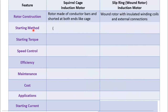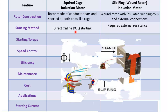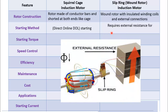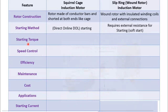The starting of squirrel cage is simple, for example direct on line starting. Whereas, the slip ring motor requires external resistance for soft starting. Starting torque of squirrel cage motor is lowest compared to slip ring motor.